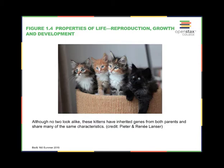Reproduction: living things reproduce — if not, they'll go extinct. Reproduction may be one of the main hallmarks of life. Growth and development: all organisms grow and mature and develop from their newborn state. Kittens grow up to be adult cats. The kittens in the picture are all offspring from the same set of parents. Growth and development are characteristics for which we all have some understanding.